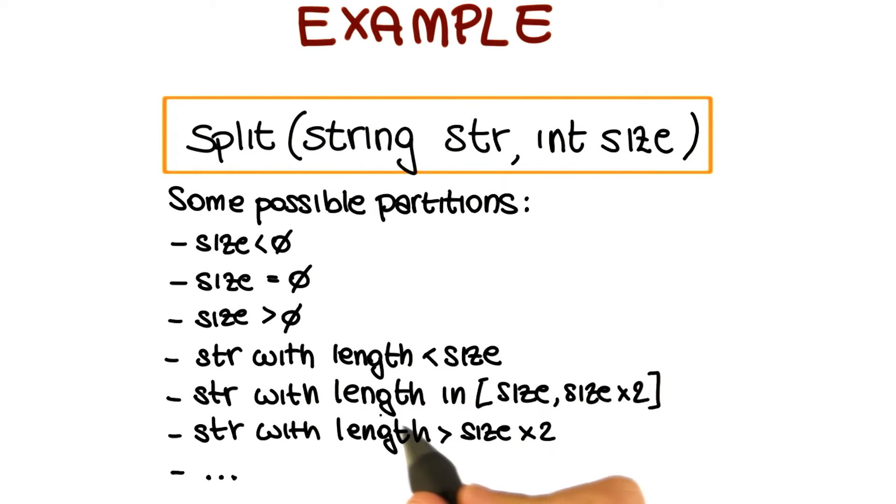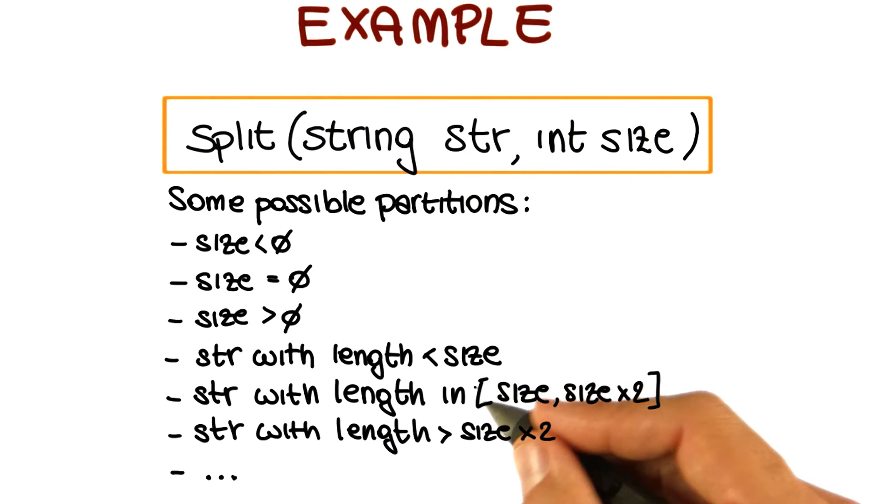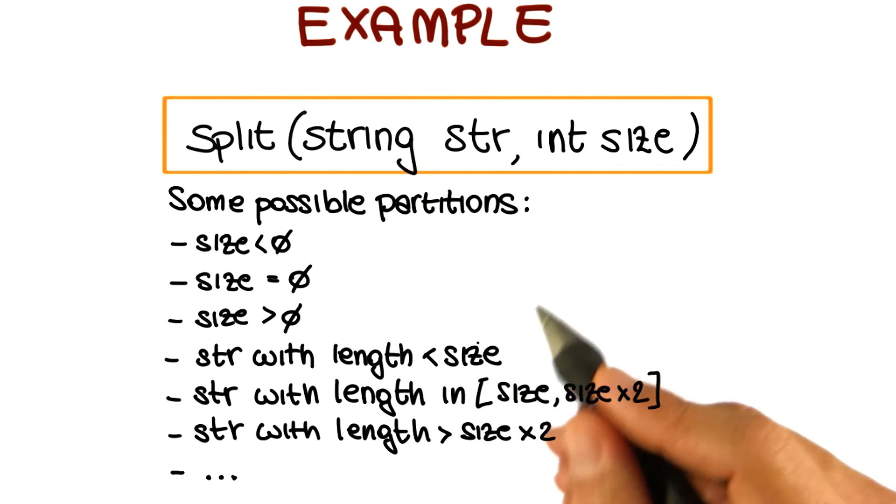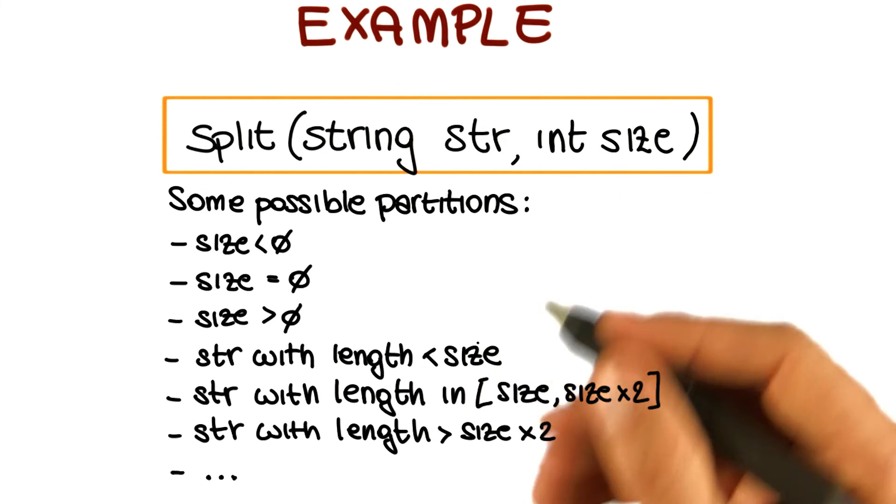Another subdomain is all the strings with length which is between the value of size and twice the value of size. A third subdomain is the one including all the strings whose length is greater than twice the value of size. And we can really continue to identify more and more subdomains. The key thing here is that we have to do that based on the domain, so we need to adapt what we just did here based on the specific domain involved and on the type of data in this domain.